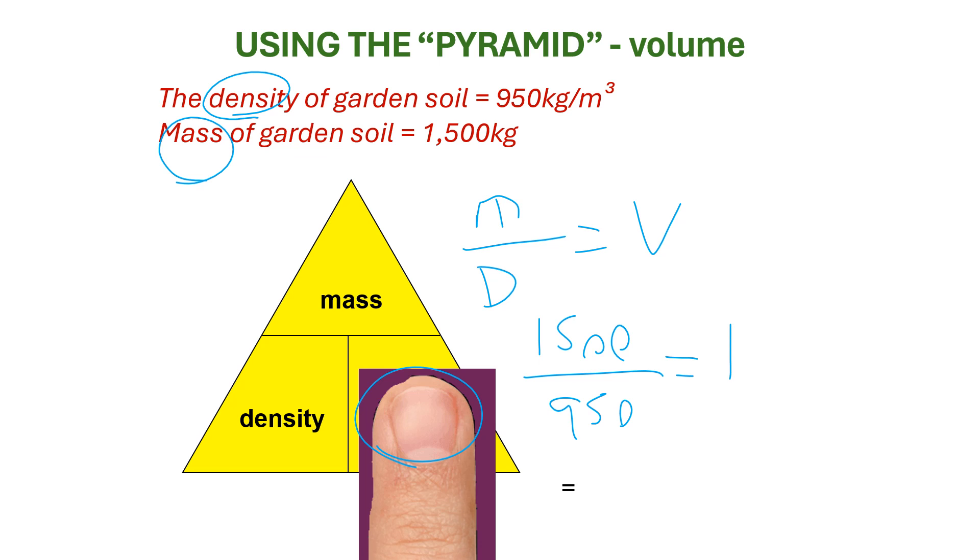And that gives us, if we go to two decimal places, 1.58. Volume is always in three dimensions. So our answer is meters cubed. Key point, make sure you memorize your pyramid.